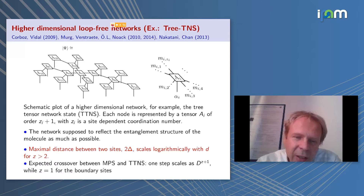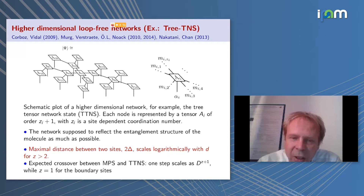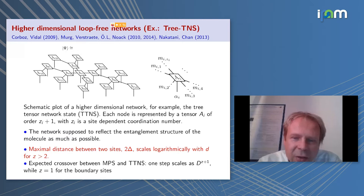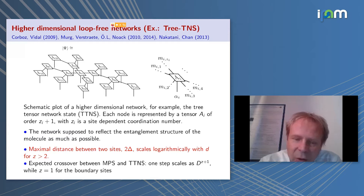There are also higher-dimensional networks discussed throughout this week. Tree tensor network states are very useful for treating long-range interactions, because the maximal distance between two sites scales logarithmically with the distance when the coordination number is larger than 2. In MPS the coordination number is 2, while in tree graphs some tensors have three or four legs. The optimization scales as d to the z+1, adding an extra cost for local updates, but the boundary scales exponentially for a tree.